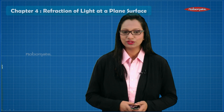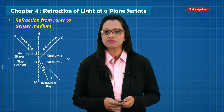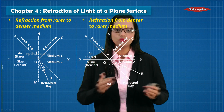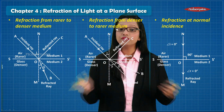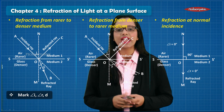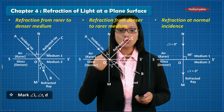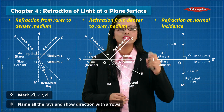The next section is Light, which is majorly dominated by diagrams. The first chapter is Refraction of Light at Plane Surfaces. The first diagram is refraction from rarer to denser medium, the next is refraction from denser to rarer medium, and the last is refraction at normal incidence. After drawing the diagram, check that you have marked all the angles — angle of incidence, angle of refraction, and angle of deviation — and labeled all the rays along with the arrows.